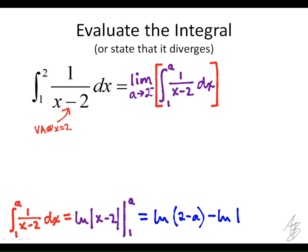What is the natural log of 1? Zero. So it's really just the natural log of 2 minus a. What we've done here is we have shown that this definite integral here is equal to this natural log here.